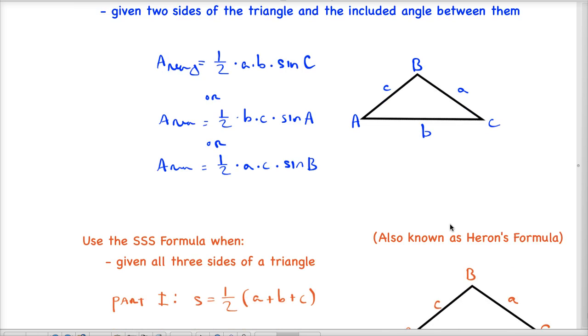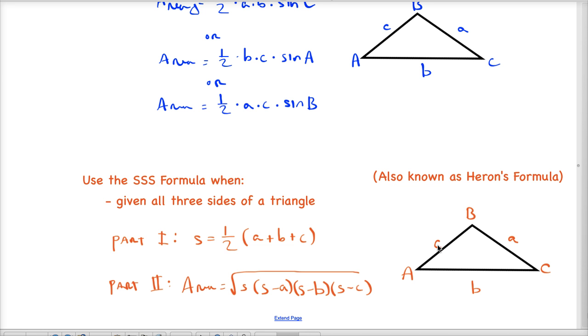The other formula that we'll be able to use is the side side side formula, also known as Heron's formula for the Greek mathematician who discovered it. This is what we'll use when we're given all three sides of a triangle and not given the height or altitude.